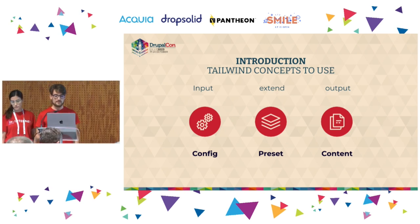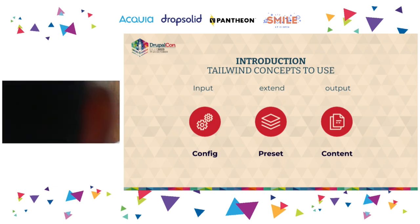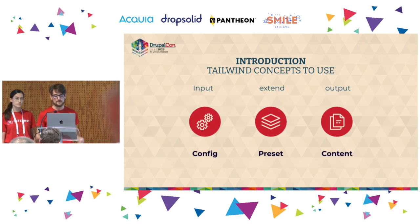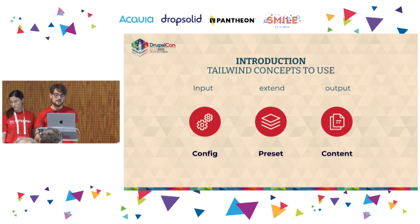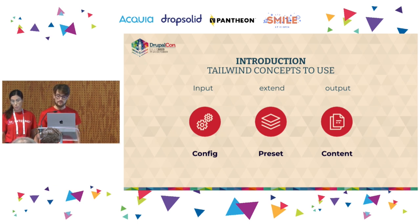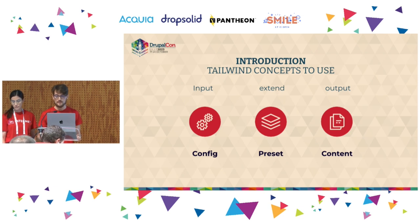We use three main Tailwind concepts. First, the config file — that's the input, where we define how Tailwind is configured. Second, extending — we use presets so the Tailwind config is defined in one place and can be reused across multiple projects. In the theme layer, we extend that single file in multiple places. Third, the content concept for the output — we tell Tailwind where classes are being used so it knows which ones to purge and which ones to include in the final output.